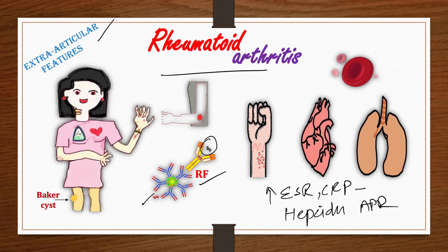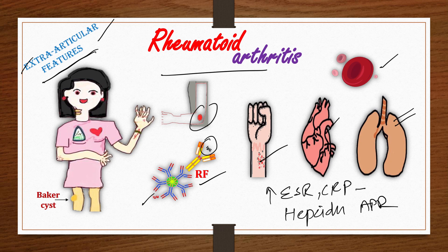Patients may have both articular and extra-articular manifestations. In our previous lecture we covered articular manifestations, so today we will discuss the extra-articular features. These include pulmonary fibrosis, pleuritis, hematologic abnormalities like anemia, pericarditis, vasculitis, subcutaneous nodules, Baker's cyst, ophthalmologic manifestations, and CNS manifestations like depression.